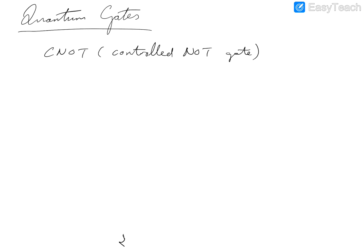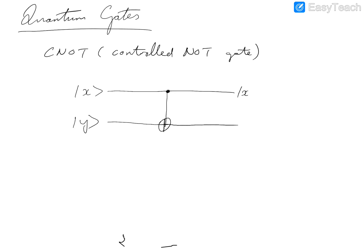The CNOT gate, or controlled NOT gate, is defined in the following manner. We have two inputs, |x⟩ and |y⟩. We take the CNOT with X being the control bit and Y being the target bit, and the output is X and X XOR Y. So this is simply the XOR operation.